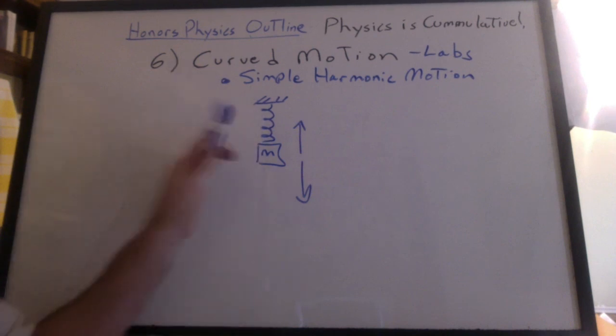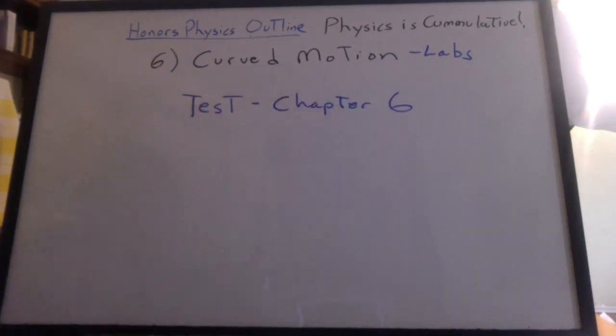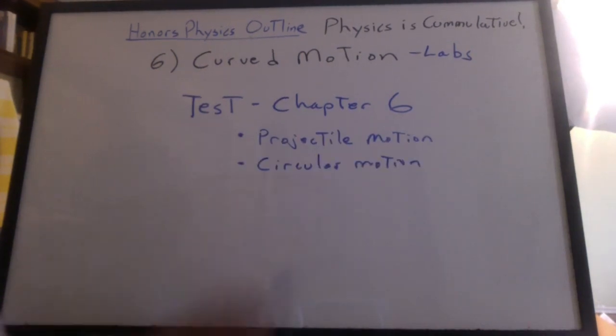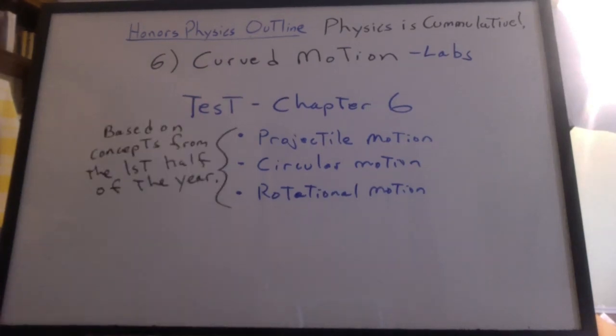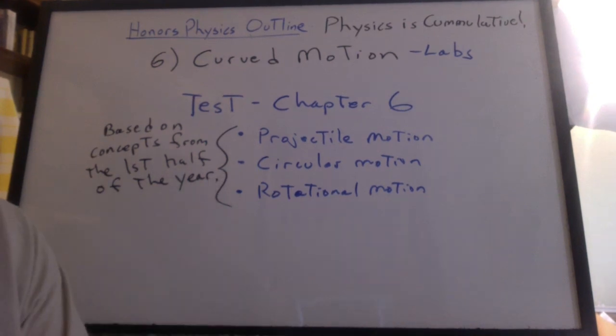Last lab we worked on is the simple harmonic motion lab with a weight on a spring going up and down. It's related to circular motion, but we're going to save this until after the big test. So we're going to have a test on chapter six, which is curved motion. We'll have a couple of projectile motion questions, a couple of circular motion problems, and a couple of rotational motion problems. All of this was based on concepts from the first half of the year. So it's not a midterm, but you still have to know everything. That's just the nature of physics. I'll send out a review sheet.